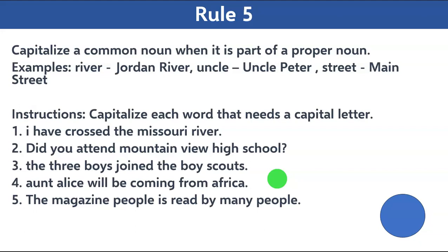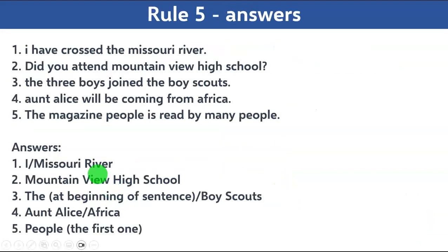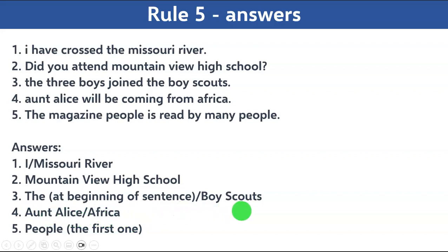Alright, let's look at the answers. 'I have crossed the Missouri River' — 'I' and 'Missouri River' are capitalized, as it is a proper noun. 'Did you attend Mountain View High School?' — all four words are capitalized as a particular school's name. 'The three boys joined the Boy Scouts' — 'The' and 'Boy Scouts' are capitalized. 'Aunt Alice will be coming from Africa' — 'Aunt Alice' and 'Africa' are capitalized. 'The magazine People is read by many people' — the first 'People' (the magazine name) is capitalized.